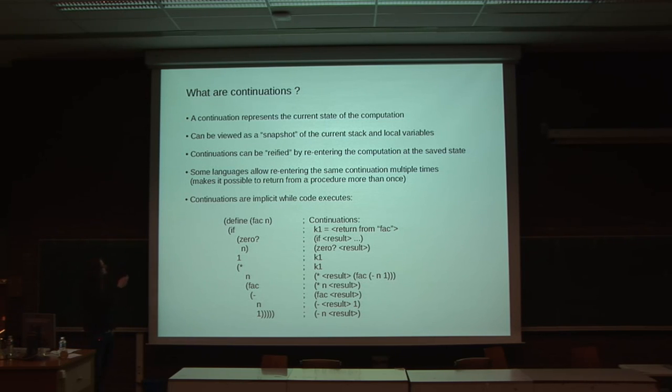Here I have an example that attempts to show where the continuation is, what the continuation represents while code is executing. So this is scheme code now, and this is a function definition of the very well-known factorial function. In every position, in every place in the computation, there is an implicit continuation that represents what happens next.